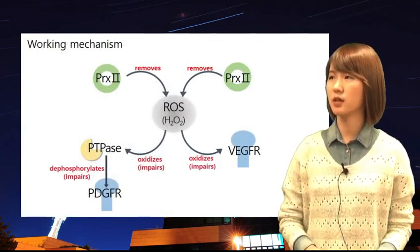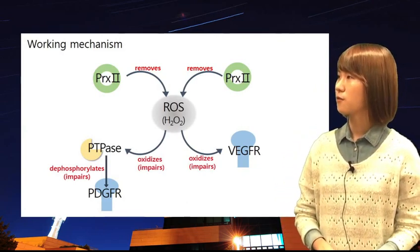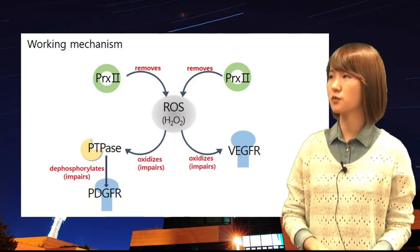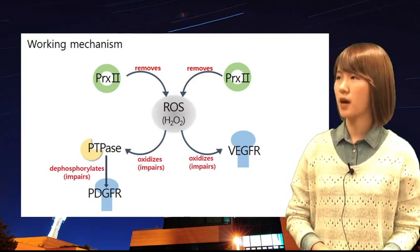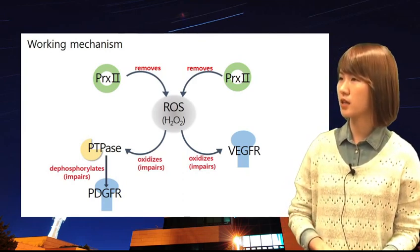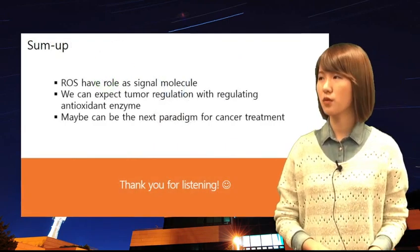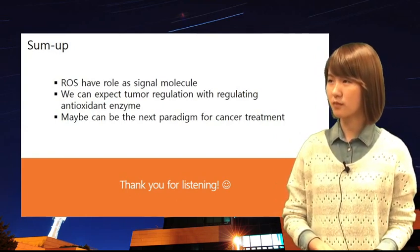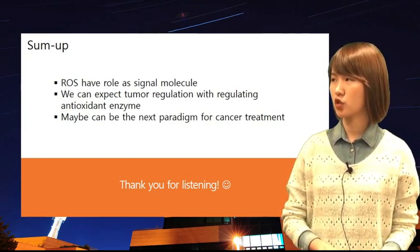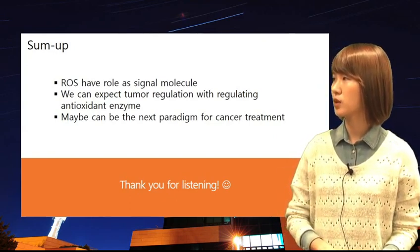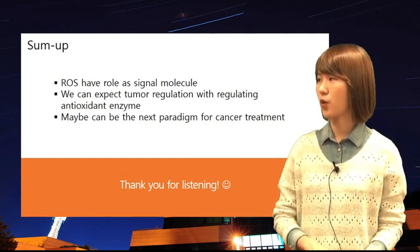The important thing here is that ROS regulates PDGFR and VEGFR in opposite ways. For PDGFR, ROS impairs PTPAs first, so it activates PDGFR. But for VEGFR, ROS directly oxidizes it, so it inactivates VEGFR. In summary, ROS has a role as a signal molecule, and thus we can expect tumor regulation with antioxidant enzymes. Maybe this can be the next paradigm for cancer treatment. Thank you for listening.